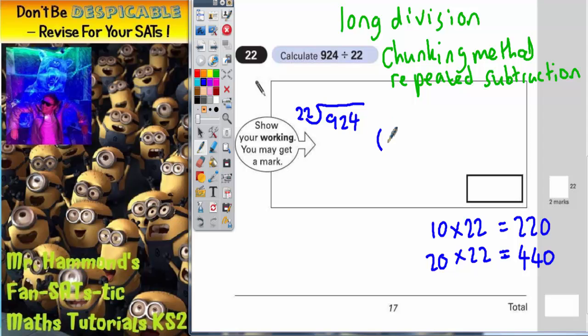So at the side, just write down how many lots of 22 you take. So this time I'll take 20. Now I've already said that 20 22s are 440. So that's what I'm going to subtract. 440.